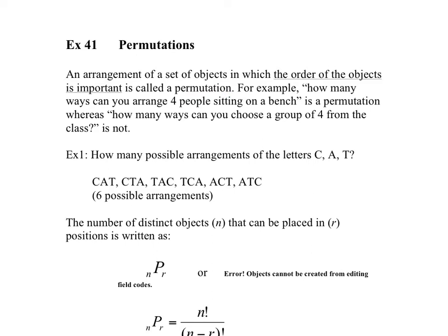For example, how many ways can you arrange four people sitting on a bench? That would be permutation, whereas how many ways can you choose a group of four from a class would not be. We'll deal with those later. Anytime you're arranging a set of people in a line, this is called a permutation.